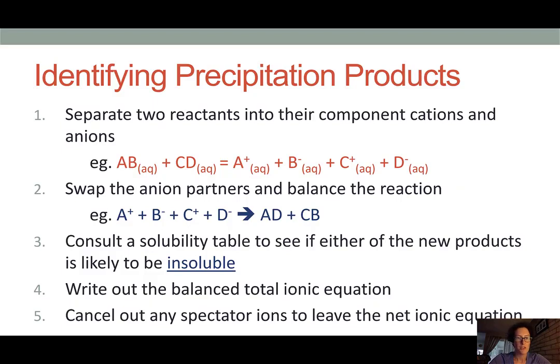We check these combinations using our solubility table to see if any of these new ionic compounds are likely to be insoluble and therefore create a product. We would then write out a balanced total ionic equation, cancel out any spectator ions, and that leaves us with the net ionic equation.